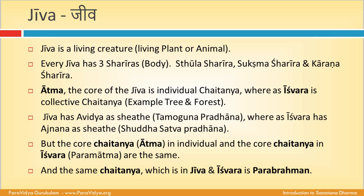Atma, the core of Jeeva, is individual Chaitanya, whereas Ishvara is collective Chaitanya. Jeeva has Avidya as its sheet, which is Tamoguna Pradhana, whereas Ishvara has Ajnana as its sheet, which is Shuddha Sattva Pradhana.